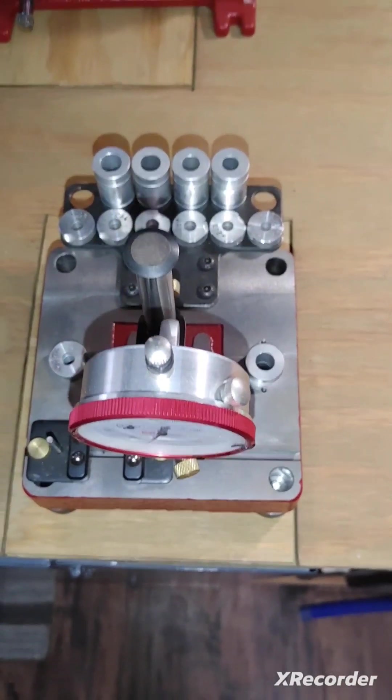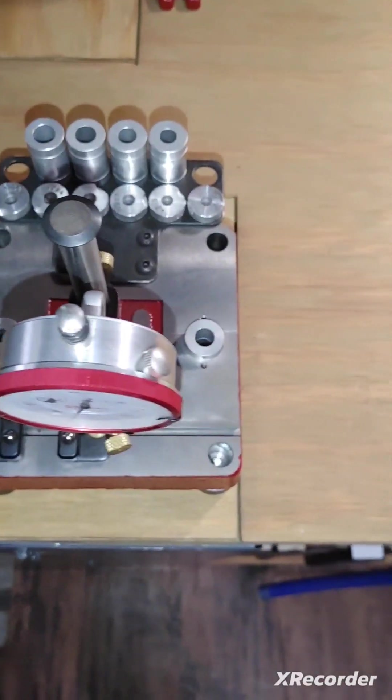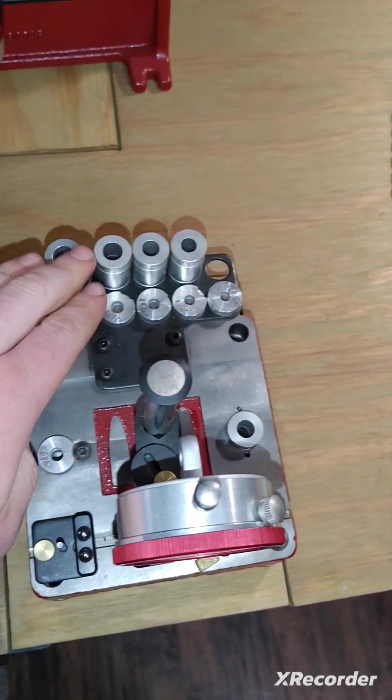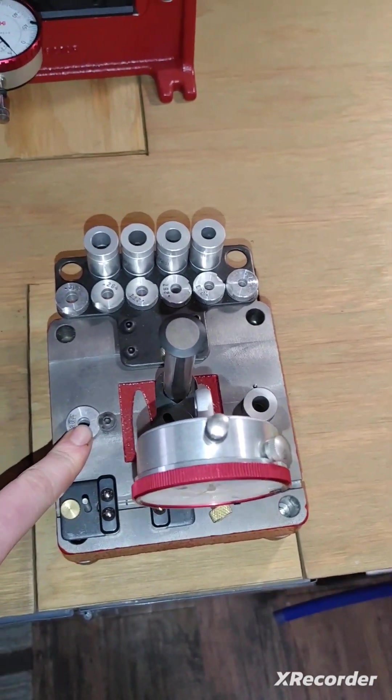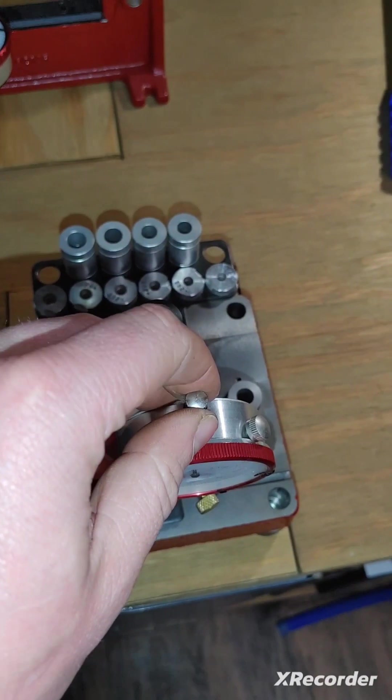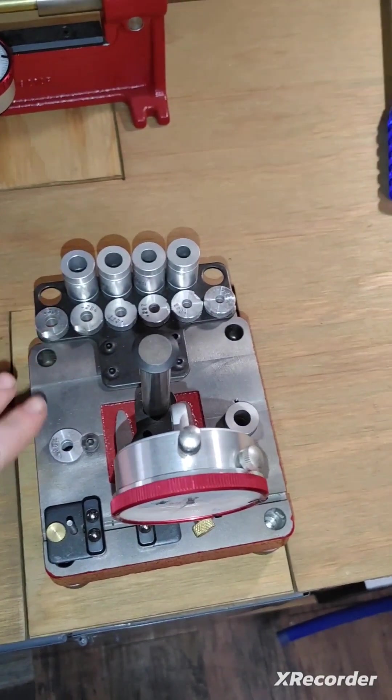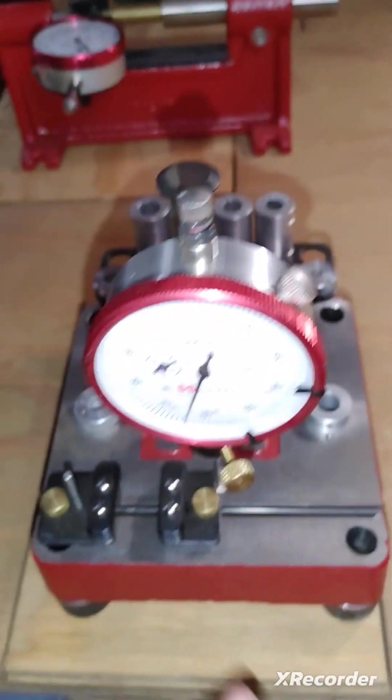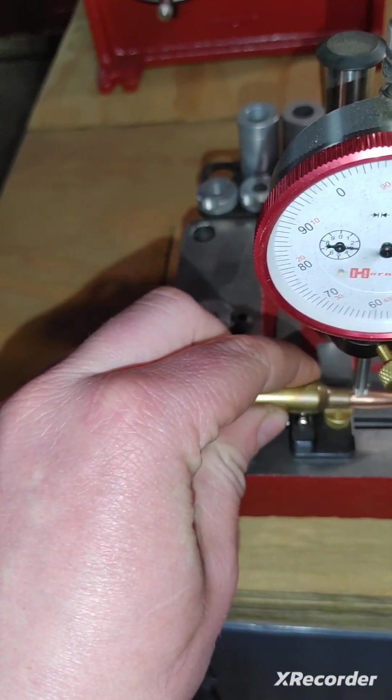Here we've got our Hornaday Precision Measurement Station. It comes with all these different attachments for different bullet ogives measuring different things. You can move this dial indicator around to measure total length. Or you can use it down here to measure bullet runout like so.